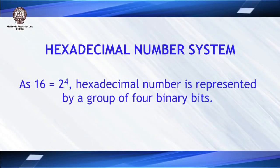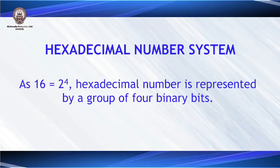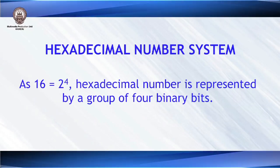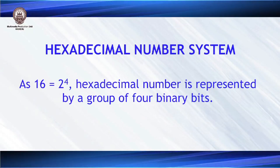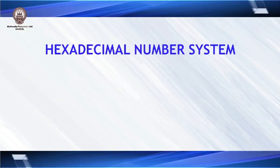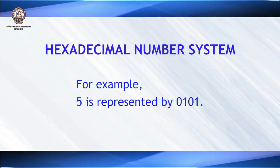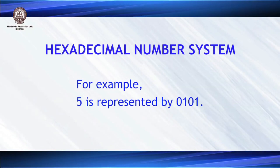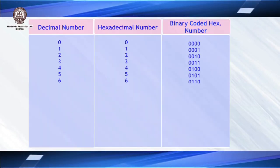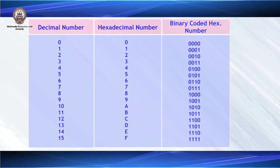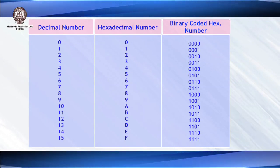Since 16 can be represented as 2 to the power 4, hexadecimal numbers can be represented using a group of 4 binary bits. For example, 5 is represented as 0101 in binary. Let us look at the slide showing decimal numbers, hexadecimal equivalents, and binary coded hexadecimal numbers.